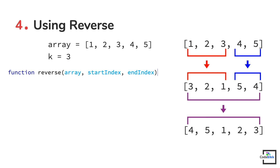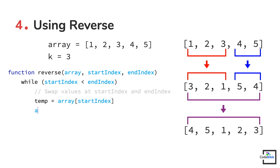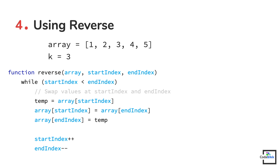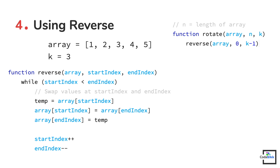The easiest way to reverse a portion of an array is as follows: first, swap the values at the start index and end index. Then increase the start index by one and decrease the end index by one. Repeat this until the start index is no longer less than the end index. Now that we have a reverse function, we call it from the rotate function to reverse the first k elements, then call it again to reverse the last n minus k elements, and finally reverse the entire array once.